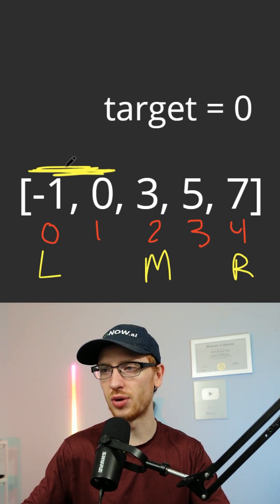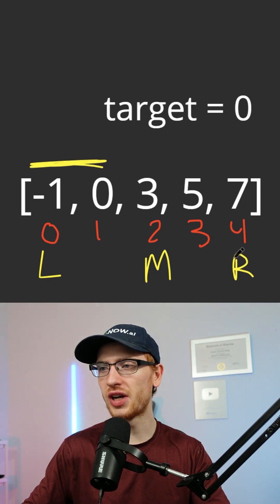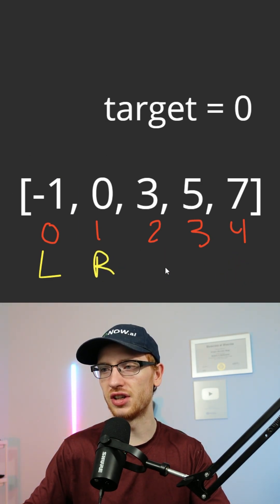That means we would want to search in this range. So to search in this range, we would have to set r to be m minus 1 and then do this again.